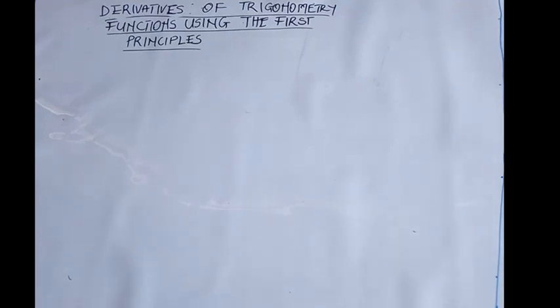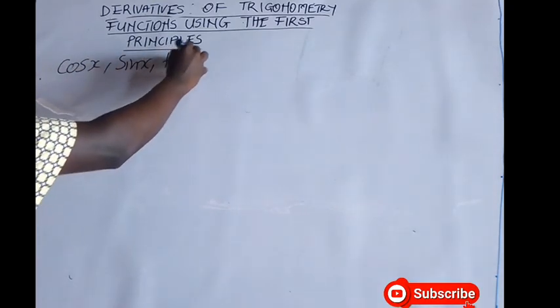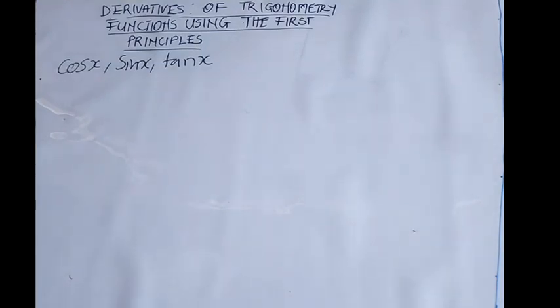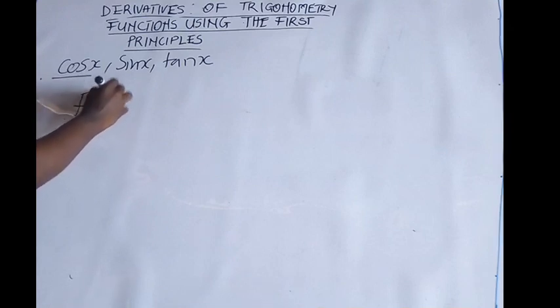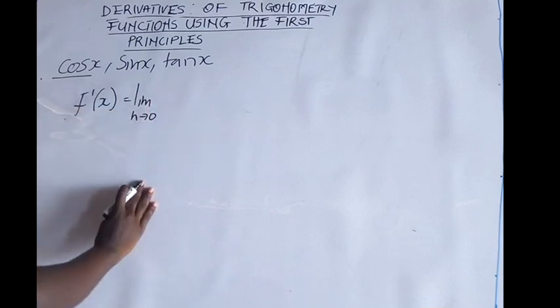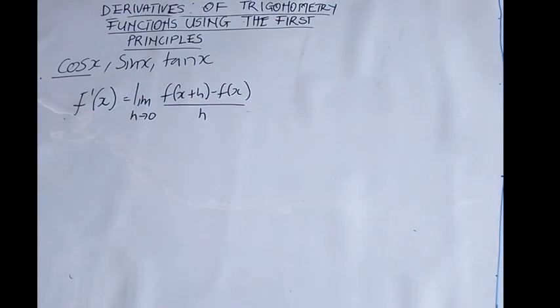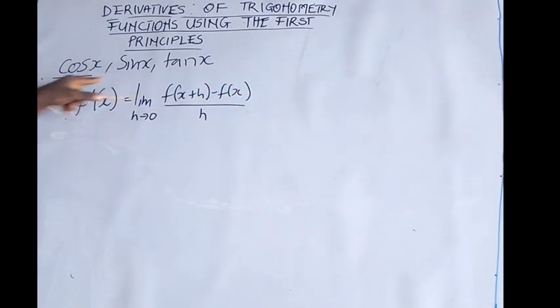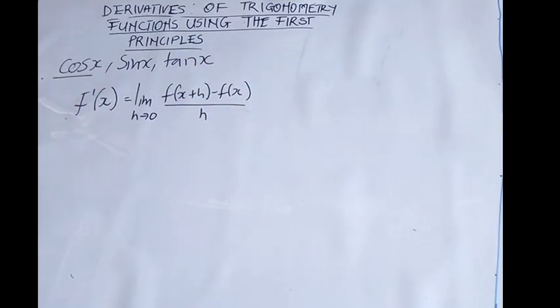In this video we are going to learn how we can differentiate the various trigonometric functions — that is sine, cosine, and tangent — using the first principles. The first principle is defined by the limit as h approaches zero of f(x+h) minus f(x), all over h. Whenever you differentiate an equation using this method, it is called differentiating from first principles.